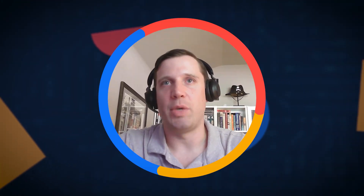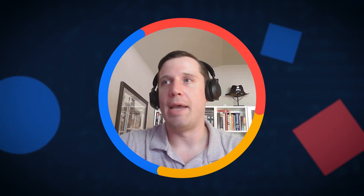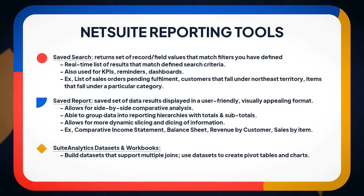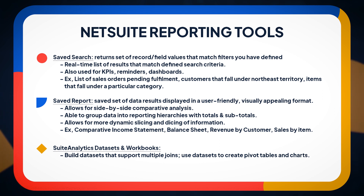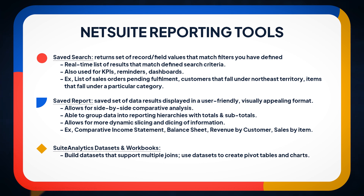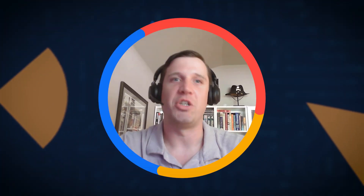We'll start with NetSuite native reporting tools, and it really consists of three main areas. First is saved searches. Saved searches are going to return sets of records or fields — think of it almost like lists that match defined search criteria that you set up. These are used for KPIs; you can set them as reminders, put them on dashboards. We're looking at list data like sales orders pending fulfillment, customers that fall under a certain territory, or items that fall under certain categories. Saved searches are kind of a baseline reporting tool in NetSuite.